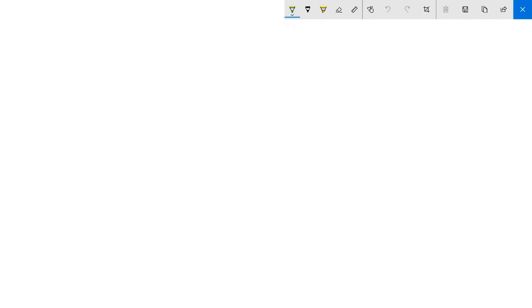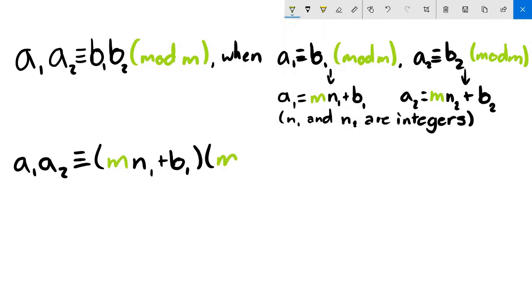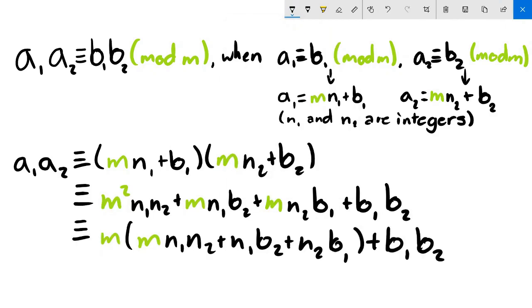To show why this works, we proved the case for multiplication. The proofs for addition and subtraction are similar. We are multiplying two numbers a₁ and a₂ mod m, and want to replace them with b₁ and b₂, with a₁ ≡ b₁ and a₂ ≡ b₂. If you recall from before, these congruency statements mean that a₁ = mn₁ + b₁, and a₂ = mn₂ + b₂, for some integers n₁ and n₂. Substituting these values in, we can expand and factor to ultimately get some multiple of m on the left, plus b₁ × b₂. Adding or subtracting by a multiple of m won't change the remainder when dividing by it, so we can get rid of the mess on the left to just leave b₁ × b₂ left. This shows that if a₁ ≡ b₁ (mod m), and a₂ ≡ b₂ (mod m), then a₁ × a₂ ≡ b₁ × b₂ (mod m).